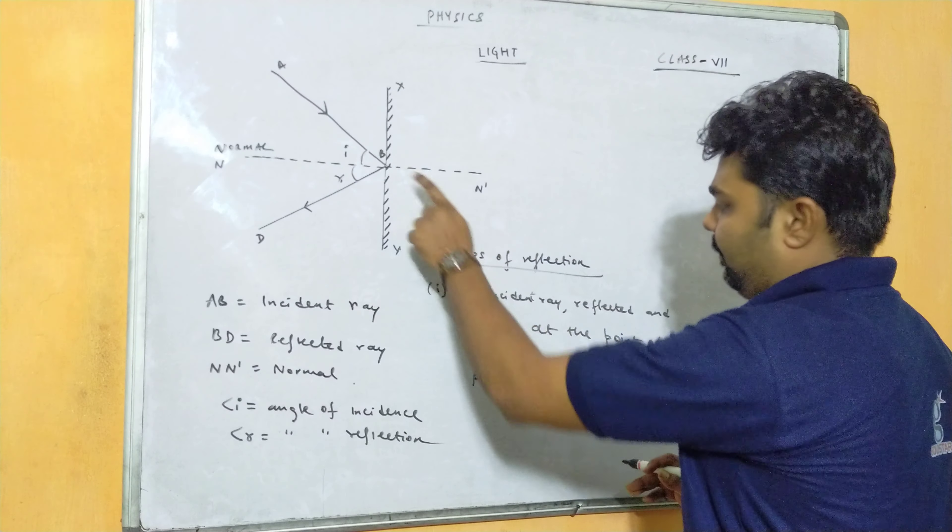The definition of lateral inversion: this phenomenon in which left appears as right, or vice versa, in the image of the object formed by a plane mirror is called lateral inversion.